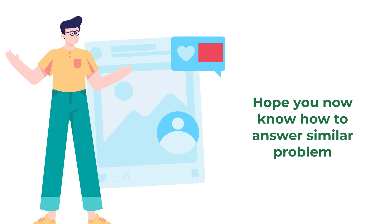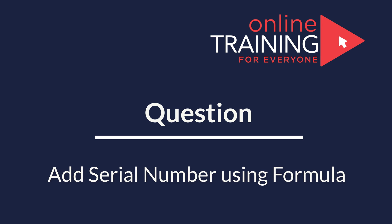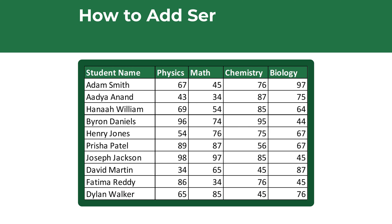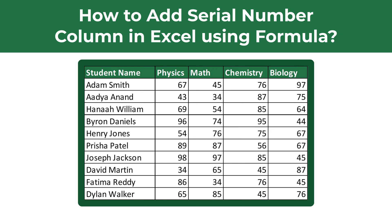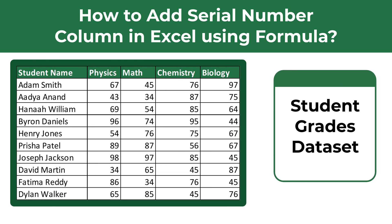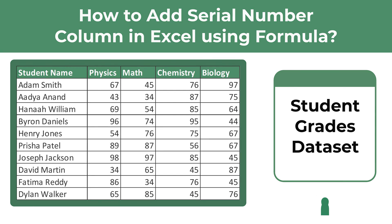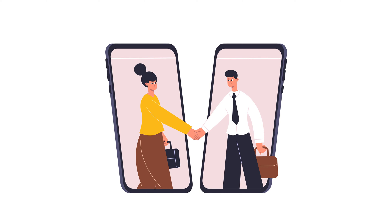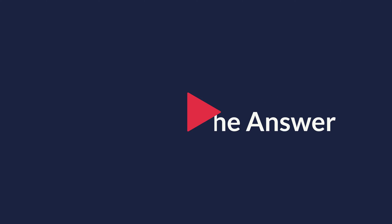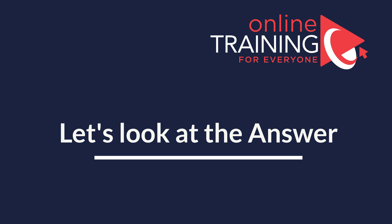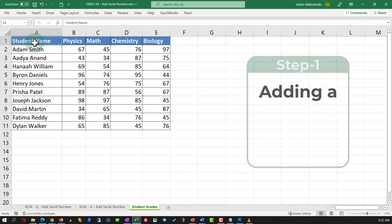Here is an interesting question you frequently see on the test. You're presented with a set of data and you need to add a serial number column using an Excel formula. In this case, we're presented with student grades information, and for each student we need to add a serial number. Give yourself a little time to see if you can complete the steps in the simulator.